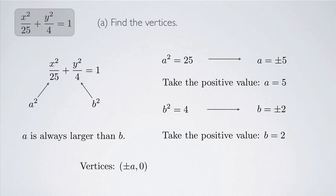The vertices are given by (±a, 0), meaning the x-coordinate is ±a and the y-coordinate is 0. If the y² term had the larger denominator, the vertices would be oriented the other way: (0, ±a). But in this case our vertices are (±5, 0).